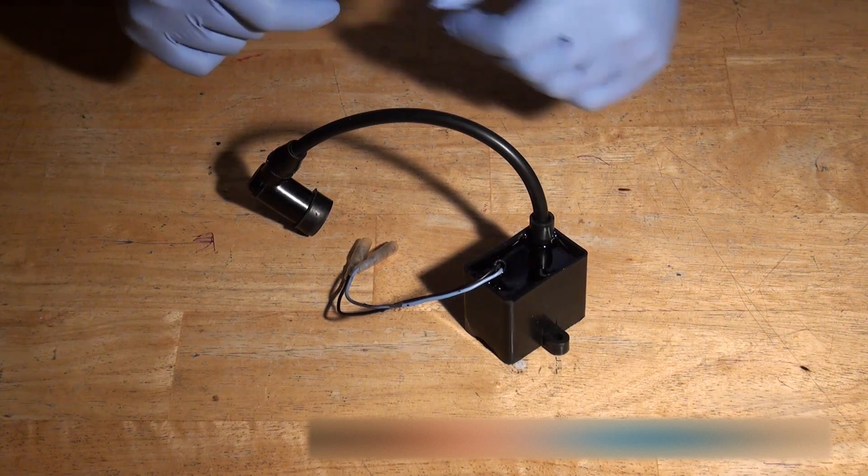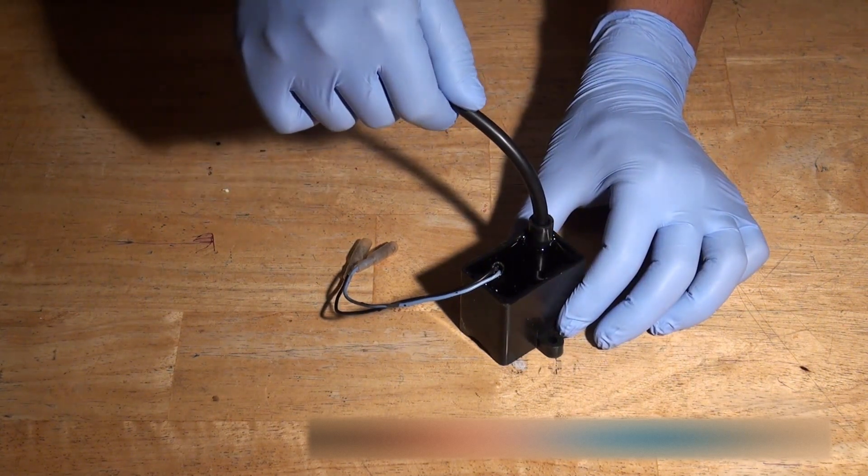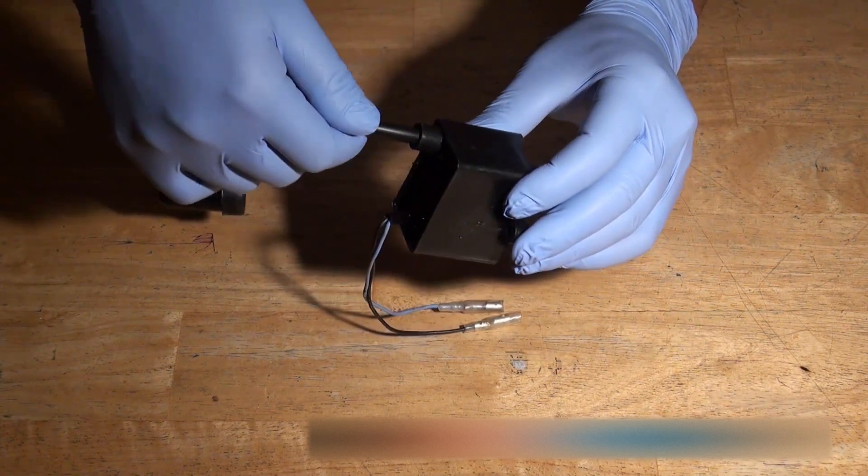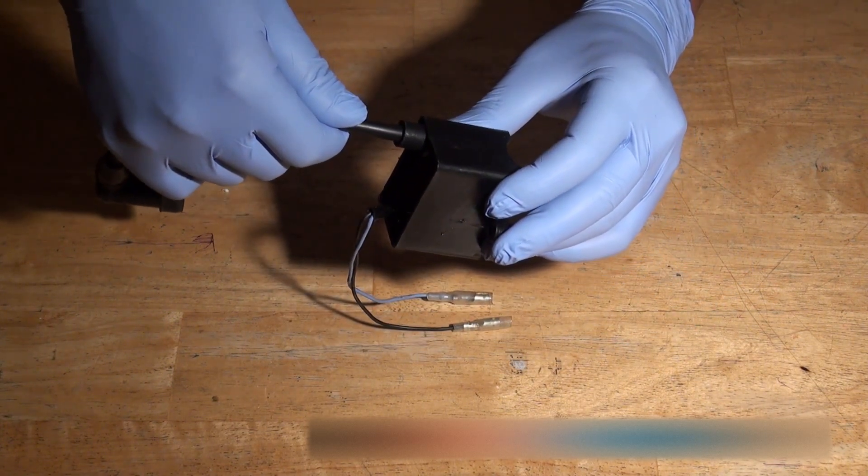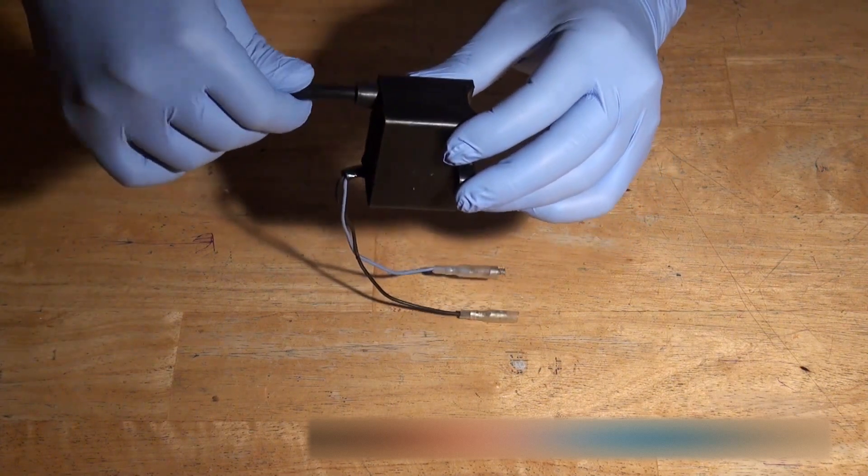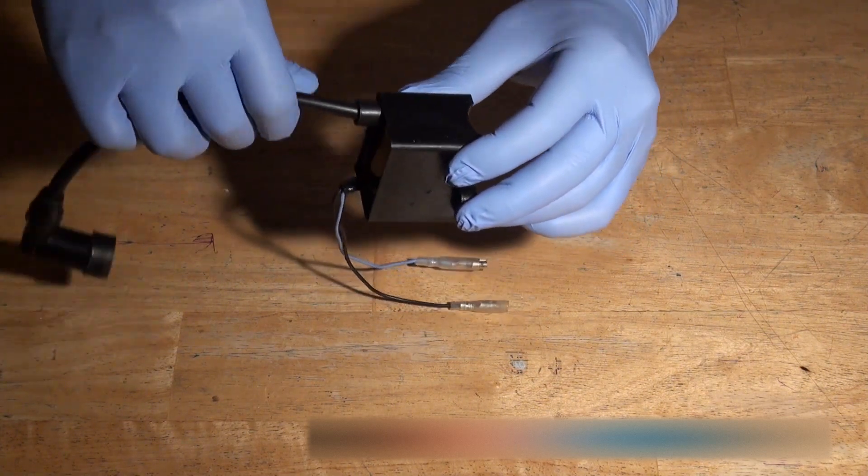The first thing that we need to do is unscrew the cable from the base of the CDI unit. So all I do is I take it and unscrew it counterclockwise, and what will happen is it will eventually come out.